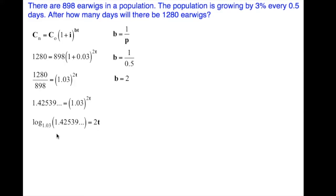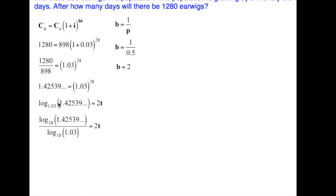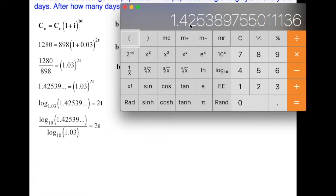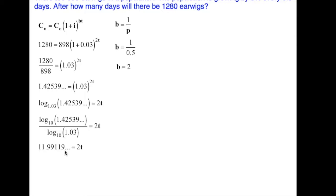We have a change of base formula that we're going to use. Using our change of base, we end up with the log of 1.42539 to the base, whatever we want, in this case 10, because our calculator can work with base 10, divided by the log of our old base, 1.03, to the base 10. Calculator time: we're going to take the log of the 1.4253, log of that, divided by 1.03, the log of that, and that gives us pretty close to 12. We have 11.9919, and it goes on forever, is equal to 2t.